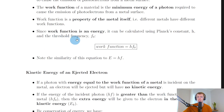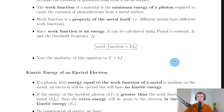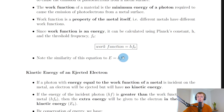Since work function is an energy, it can be calculated using Planck's constant h and the threshold frequency f0. There's a relationship here which I've put in a box because it's useful to remember, but it doesn't appear on the relationship sheet in the exam. Note the similarity of this equation to E = hf — because work function is an energy, we've basically got E = hf where f is our threshold frequency f0 and the energy is the work function.